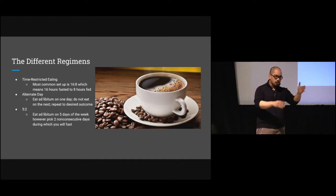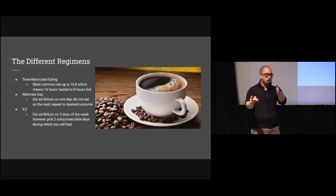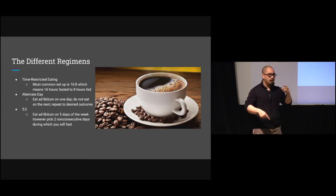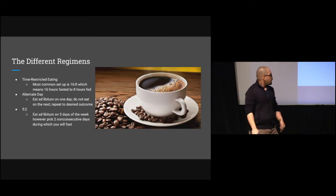Something a bit more intense is alternate day fasting: pick Monday, skip Tuesday, eat Wednesday, skip Thursday — repeat. You don't think too much about it. If you ate yesterday, don't eat today. And then there's the 5:2.